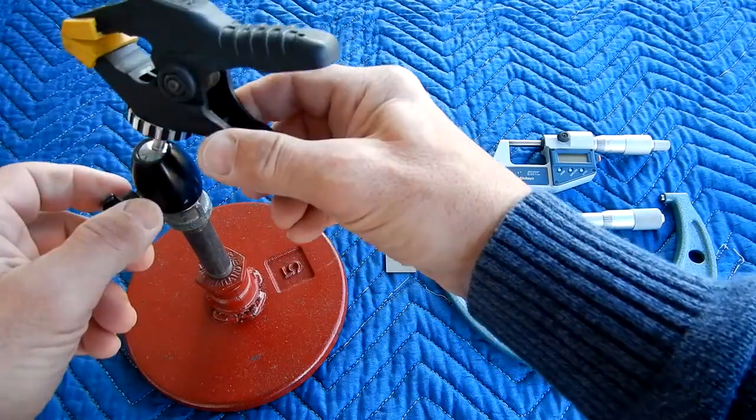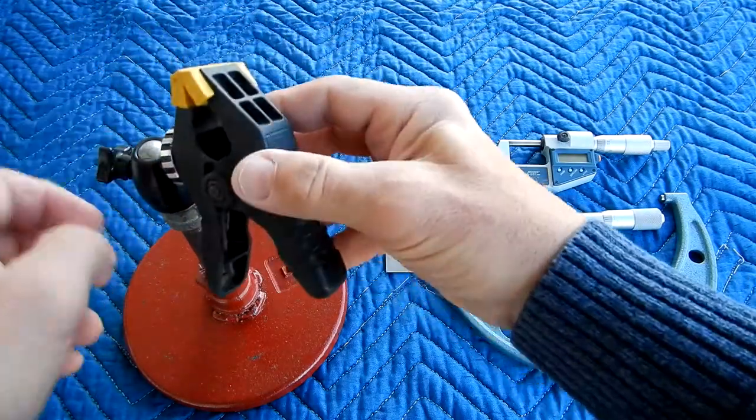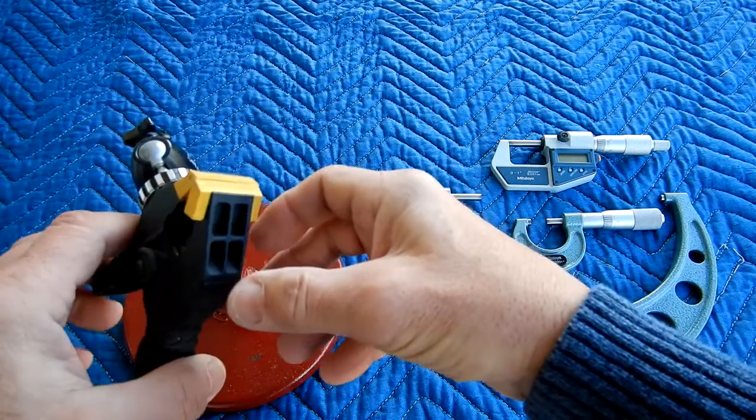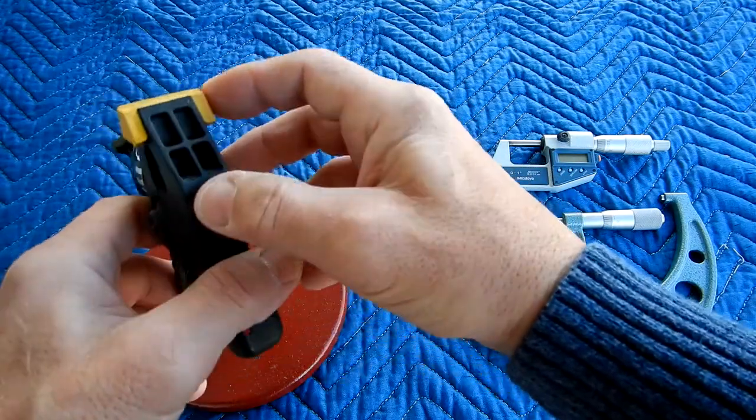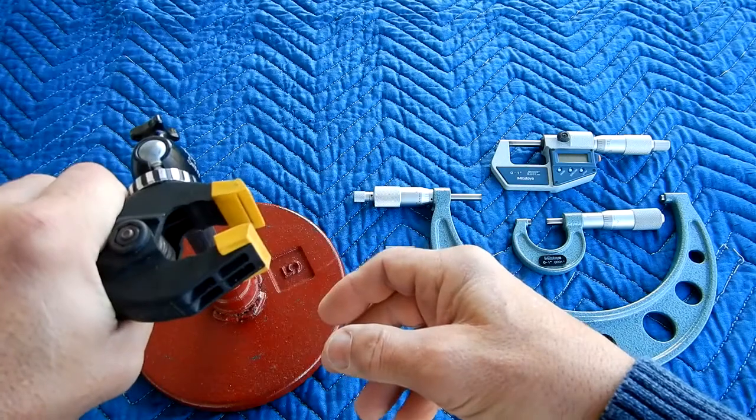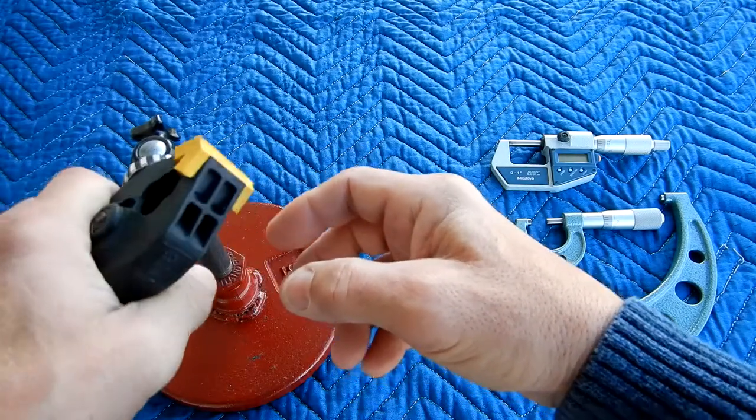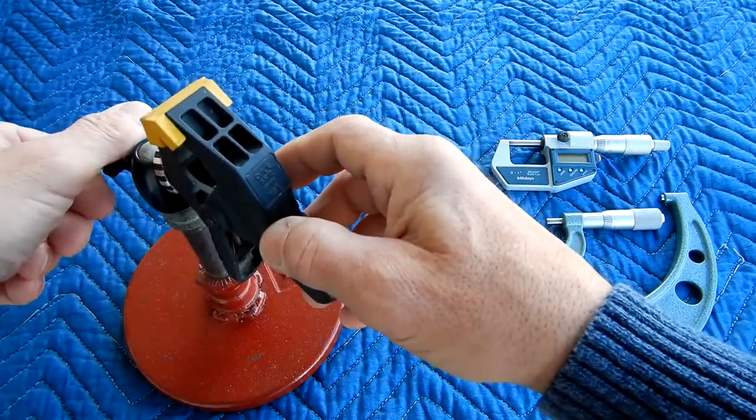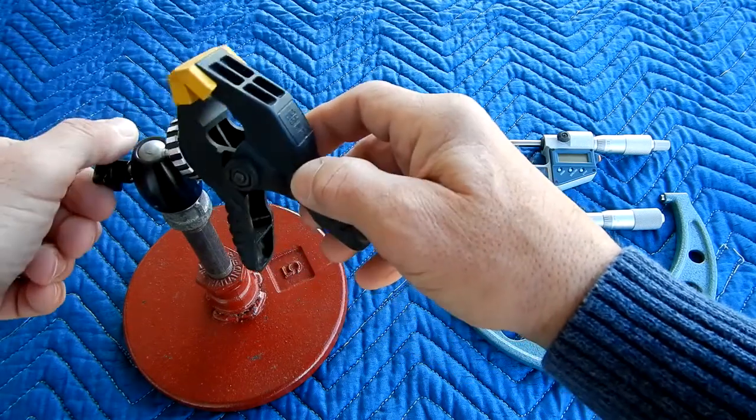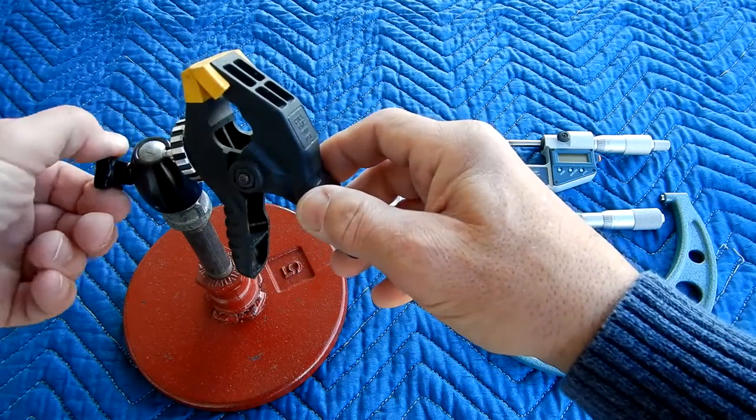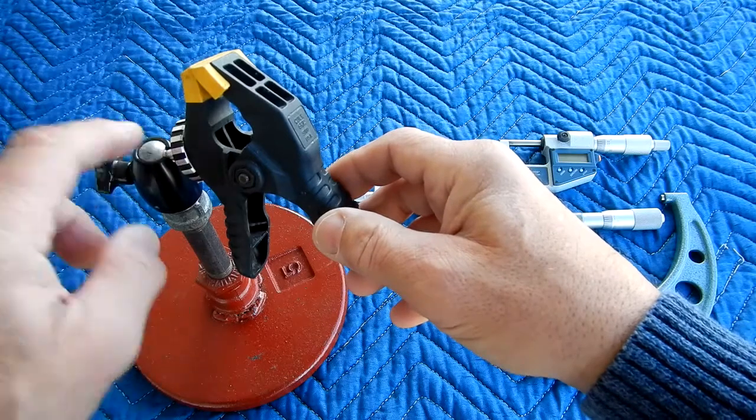So what this mini ball head allows is the placement of this at any angle. You would attach your micrometer here, then you could put it at whatever angle you desire depending on standing or sitting. The mini ball head works great.